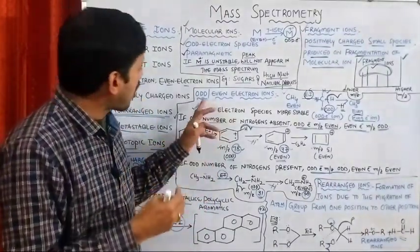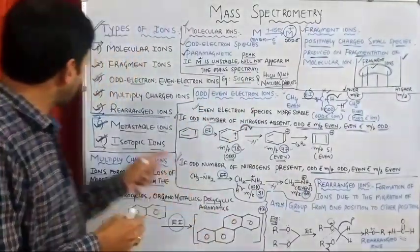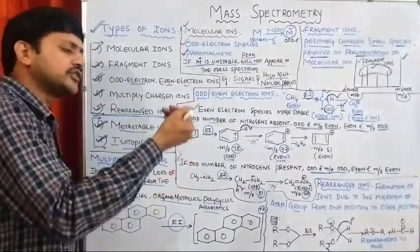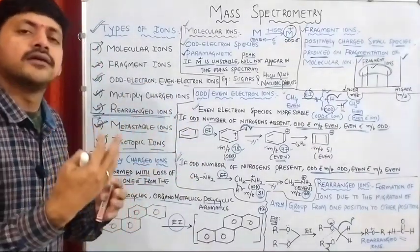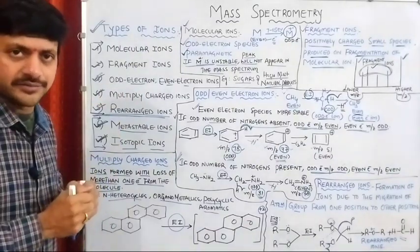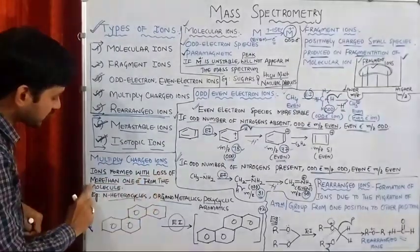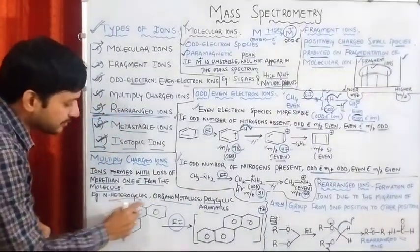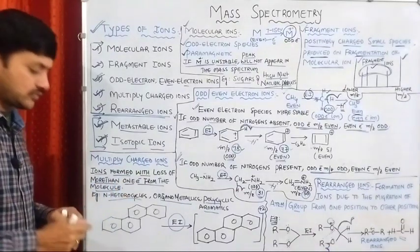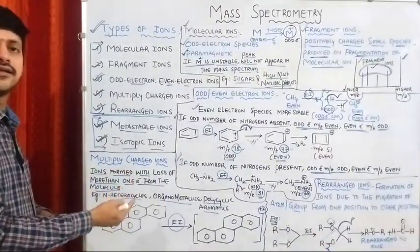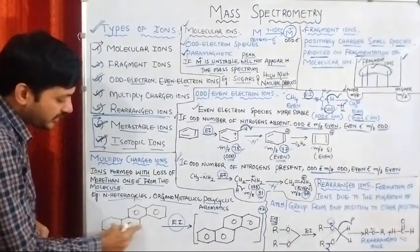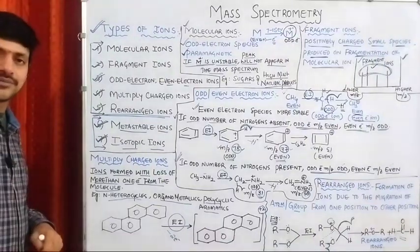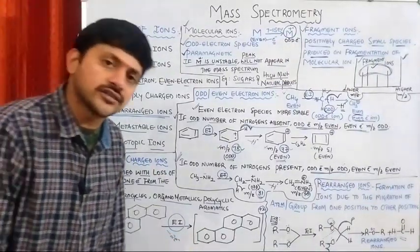Next, multiply charged ions. Many organic molecules can lose more than one electron, giving multiply charged ions. These ions form by the loss of more than one electron from the molecule. This commonly occurs with heterocyclic compounds, organometallic compounds, and polyaromatic compounds. Under electron bombardment, plus-two charge means 2 electrons are removed, giving multiply charged ions.